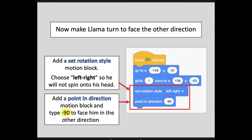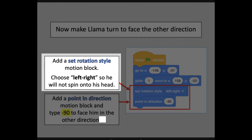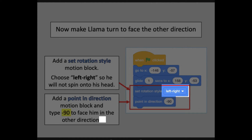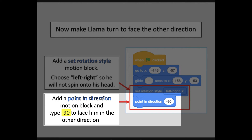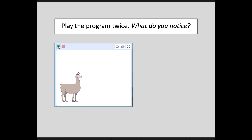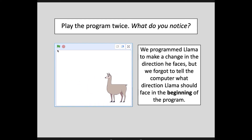Now let's make Llama turn to face the other direction. To do that, I have to pay attention to my rotation style. I don't want him to spin over on top of his head — I just want him to turn around so he can walk the other direction. So I need to add a set rotation style motion block and choose left-right from the dropdown menu. Then add a point and direction motion block and type negative 90 to face him in the other direction. Then play your program twice. We programmed Llama to change the direction he faces, but we forgot to tell the computer what direction he should face at the beginning of the program. This is a really common mistake that early coders make — you must always program how you want your sprites to start. If you fail to do that, your program will probably run correctly the first time, but when you play it a second time you will notice the problem.